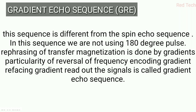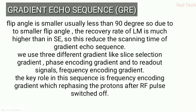In this sequence, we are not using any 180-degree RF pulse to rephase the transverse magnetization. This is done by the gradient — particularly by reversing the frequency encoding gradient. Refocusing and reading out the signals is called the Gradient Echo sequence. No 180-degree RF pulse is used; instead, slice selection, phase encoding, and signal readout are all done by the gradient coils.